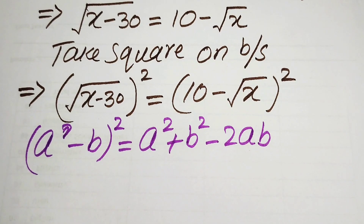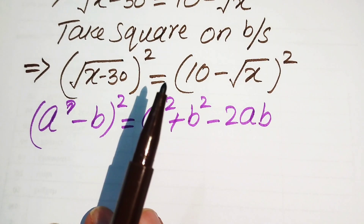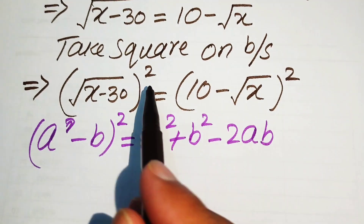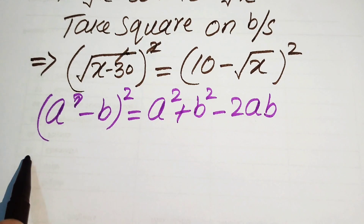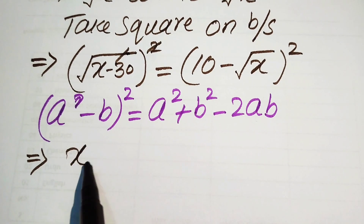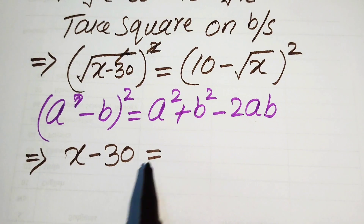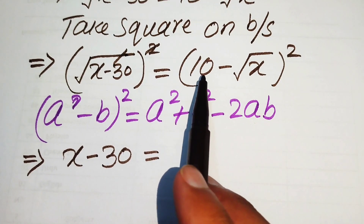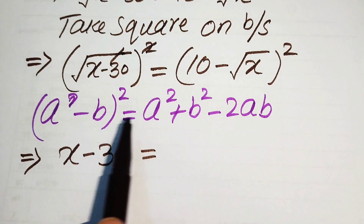We apply this square identity to the right hand side. On the left hand side, the square and square root cancel directly, giving us x minus 30. The right hand side becomes (10 minus square root of x) expanded using this formula.